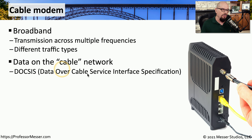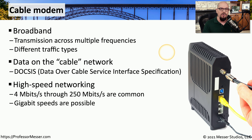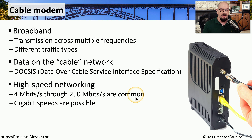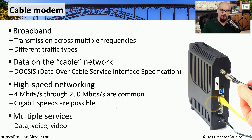DOCSIS stands for Data Over Cable Service Interface Specification, and these DOCSIS standards can support a wide range of speeds. It's common to see cable networks running at 4 megabits through 250 megabits, and these days you might even find gigabit speed or higher. Some cable modems also support video and voice connectivity along with the internet connection.